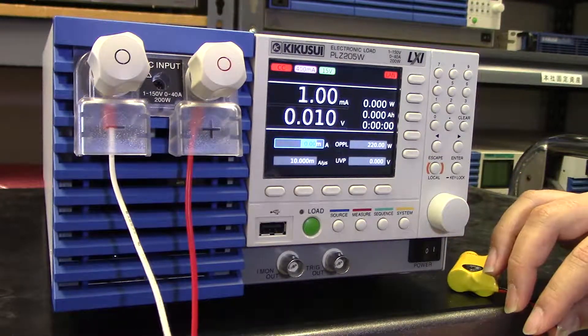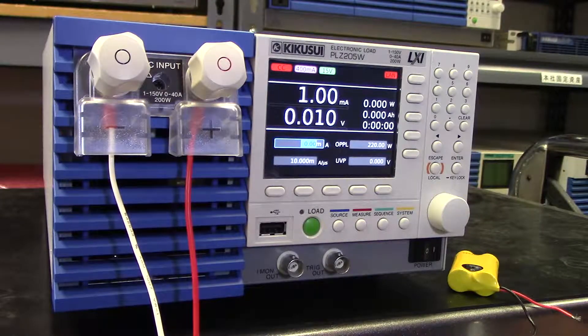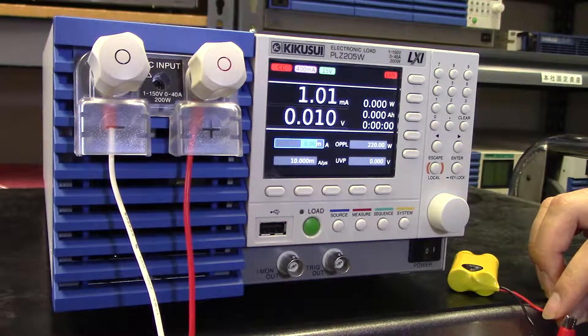we need to measure the time it takes for the battery to reach a specified output voltage that we set while the PLZ205W discharges a constant current.